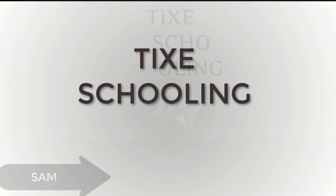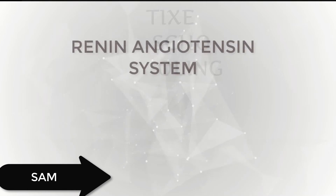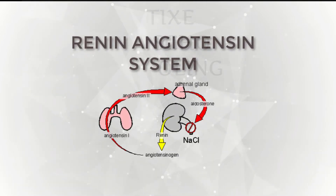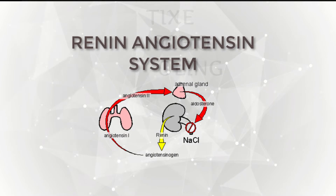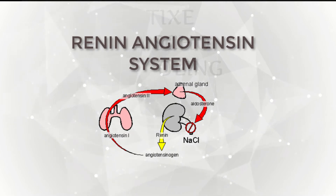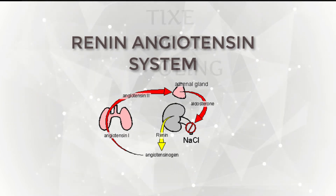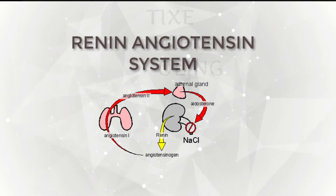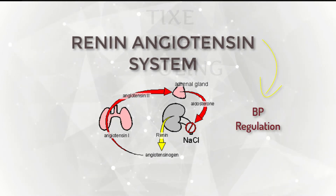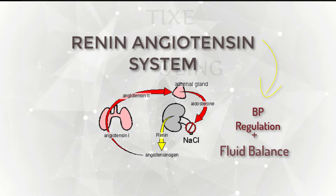Hey there, this is Sam from Tiger Schooling and today we are going to talk about the Renin-Angiotensin System, or Renin-Angiotensin-Aldosterone System. The Renin-Angiotensin System or RAS regulates blood pressure and fluid balance in the body.